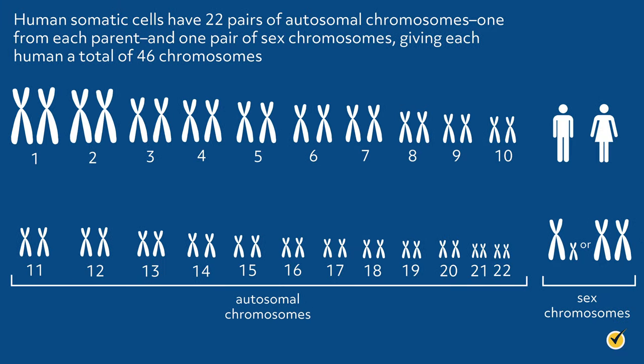First, let's remember that human somatic cells have 22 pairs of autosomal chromosomes — one from each parent — and one pair of sex chromosomes, to total 23 pairs of chromosomes for a wild-type individual. This gives humans a total of 46 chromosomes.